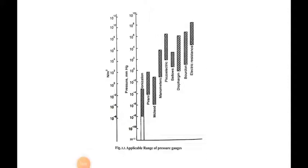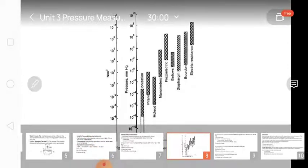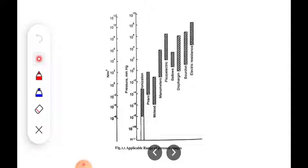The Pirani gauge measures pressure in the range of 10⁻⁴ to 10 mm of Hg. The McLeod gauge measures pressure in the range of 10⁻⁶ to 10⁻² mm of Hg. Manometers measure up to 10⁴ mm of Hg. Piezometers measure 10² to 10⁶ mm of Hg. Bellows measure up to 10⁴ mm of Hg. Diaphragm measures up to 10⁶ mm of Hg.